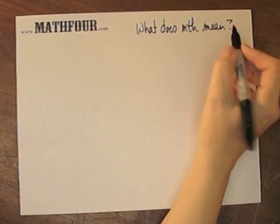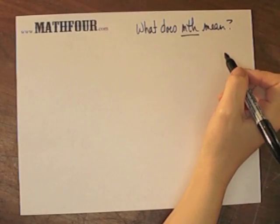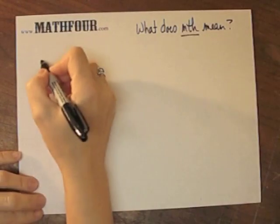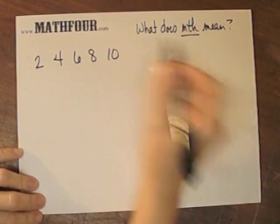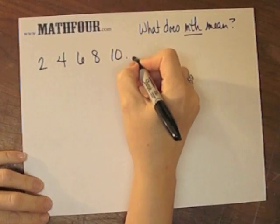What does nth mean? When you have a pattern, you have like the pattern 2, 4, 6, 8, 10. Clearly this is the even numbers and so on.